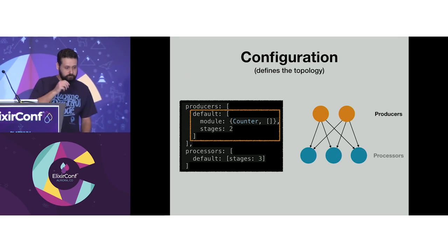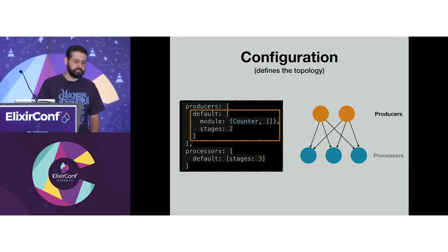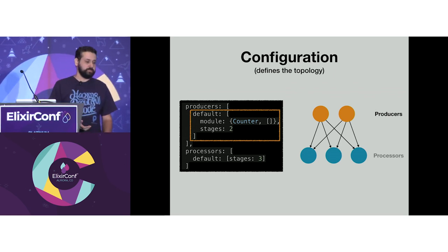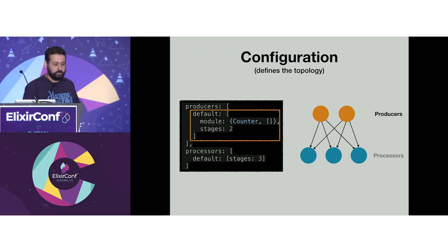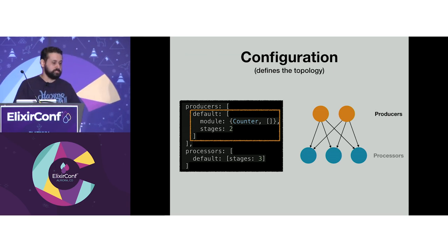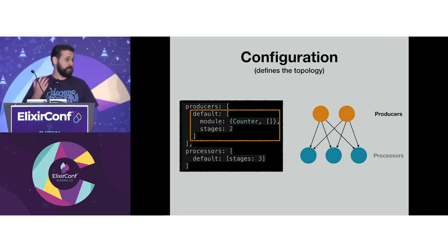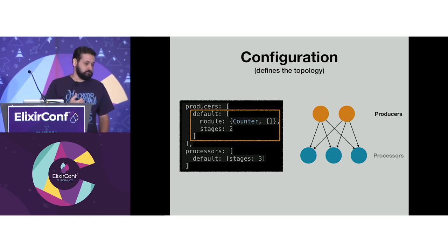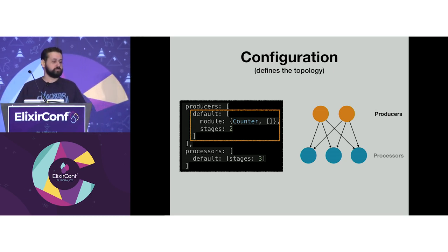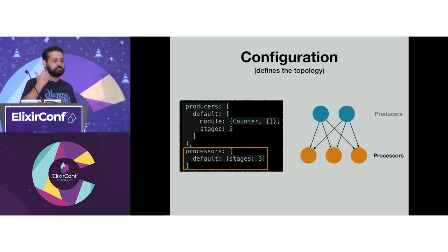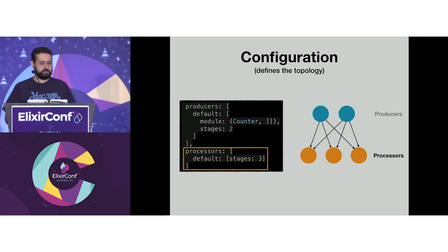Taking a closer look, this is a very simple configuration — the simplest topology you can create with Broadway. We define one group of producers called 'default'. The module of the producer is a Counter, which can be a GenStage producer if you already have one. That group of producers has two stages. And the processors — we also have a group called 'default' with three stages.